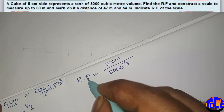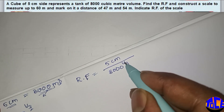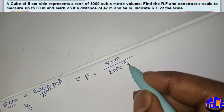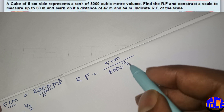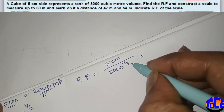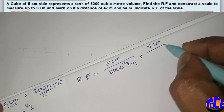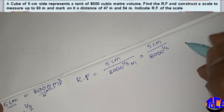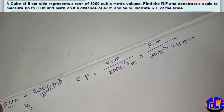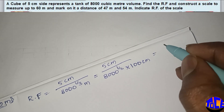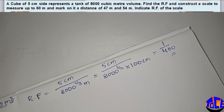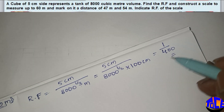So here for calculating RF: 5 centimeter divided by 8000 to the power of one by three. We are giving one by three to convert this into a single unit dimension. The units should be the same — this is in meters, so 5 centimeter divided by 8000 to the one-third power, into 100 centimeters per meter. Putting these values in the calculator, my RF will be 1 by 400, and it should remain in fraction form.